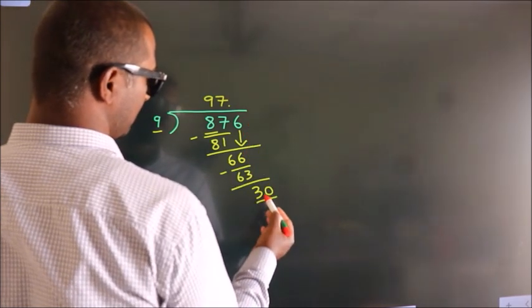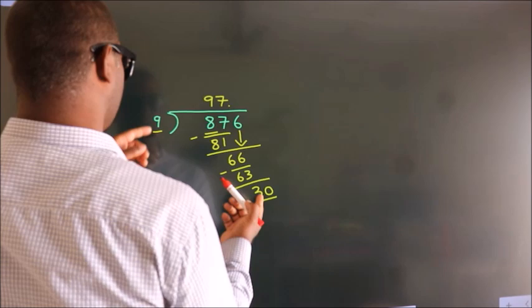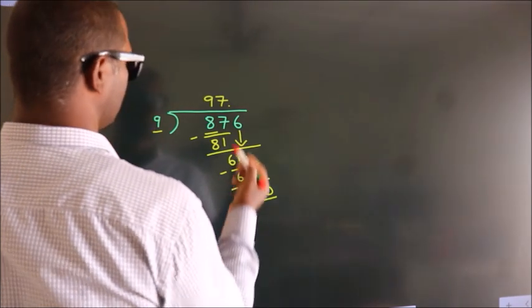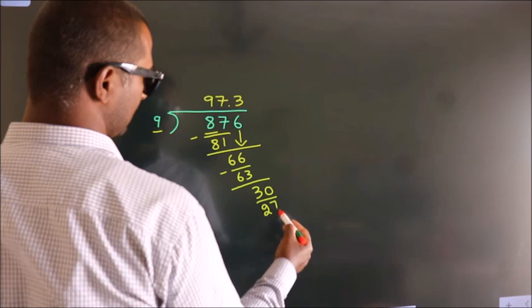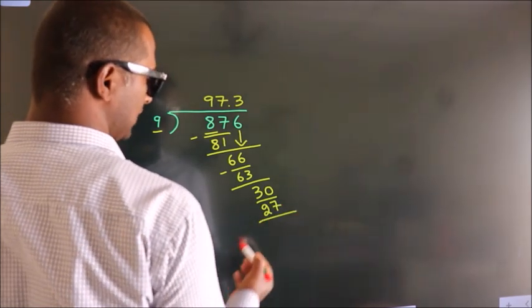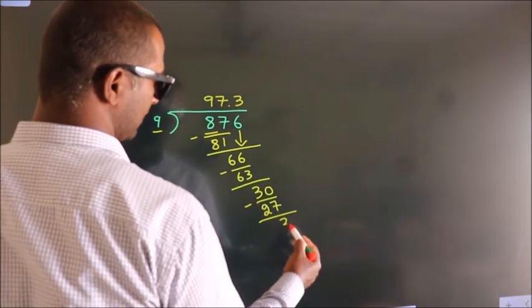A number close to 30 in the 9 table is 9 threes, 27. Now we subtract and get 3.